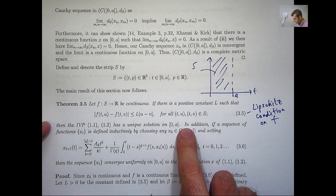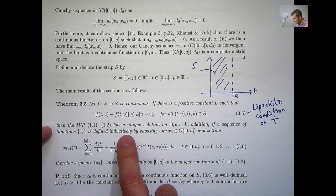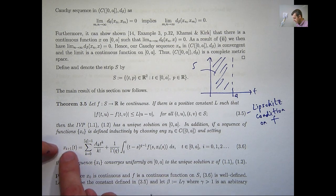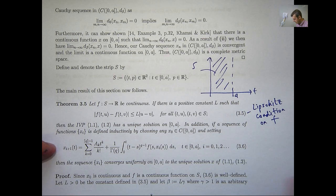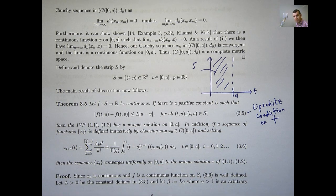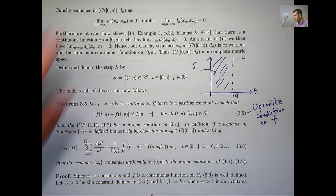There's a second part to our theorem. In addition, if a sequence of functions x_i is defined inductively by choosing any continuous function as x_0 and setting x_{i+1} equal to F(x_i) in a recursive manner, then the sequence x_i converges uniformly on this interval to the unique solution. Again, this gives a way of approximating the solution to the original problem 1.1, 1.2.